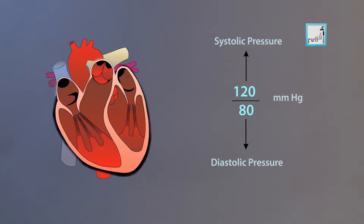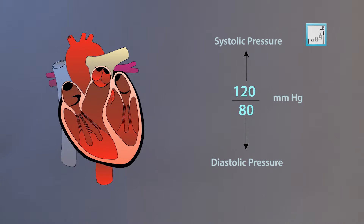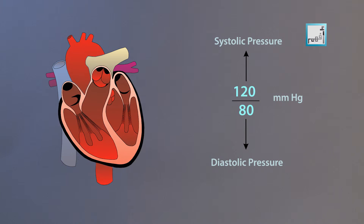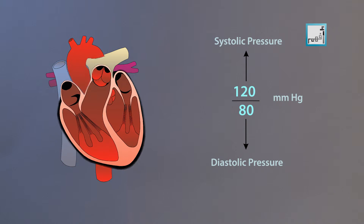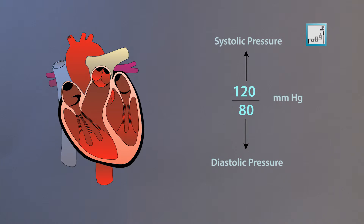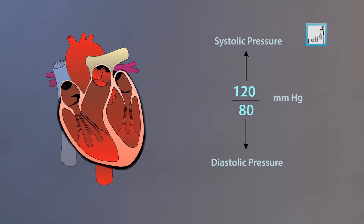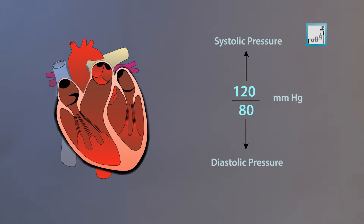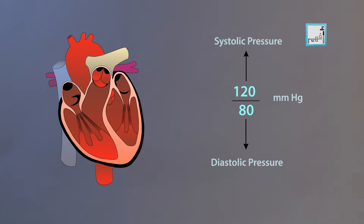One reading is taken while the heart contracts, which causes the higher pressure value, called the systolic pressure. The other is taken when the heart relaxes or rests — it's called the diastolic pressure. The systolic pressure is the upper or higher one, and the diastolic is the lower one.